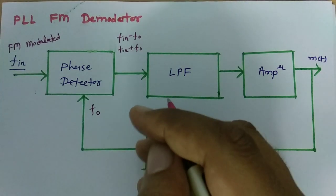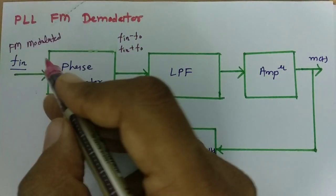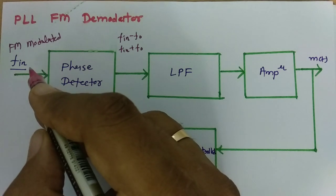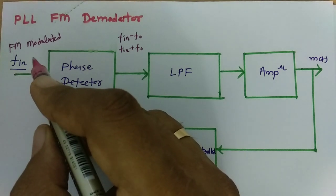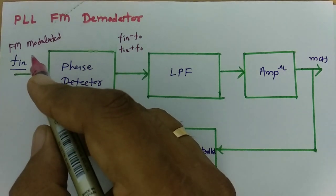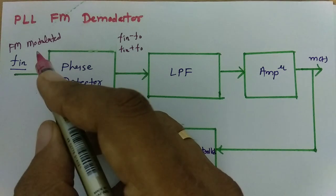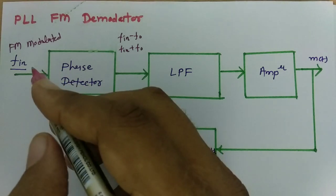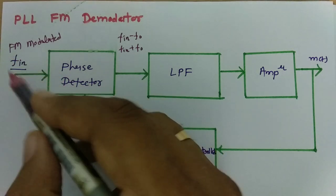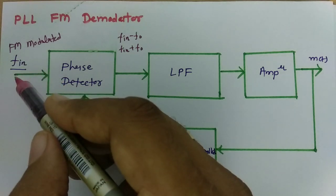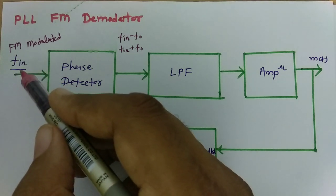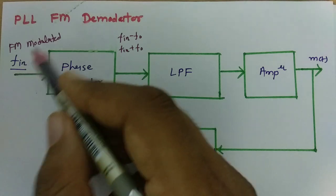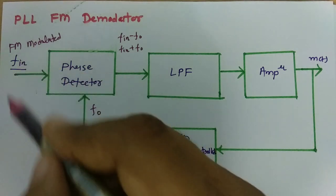The FM modulated signal is a combination of the carrier signal and the modulating signal, where the carrier signal's frequency changes with respect to the modulating signal. So F_in has a frequency equal to carrier plus deviation, and that deviation is based on the modulating signal.